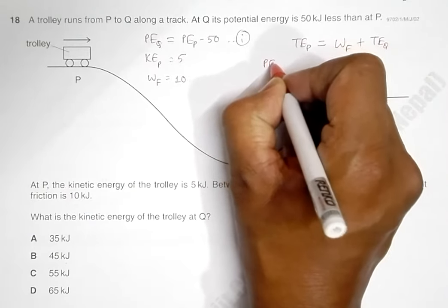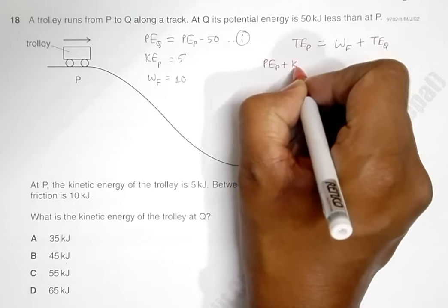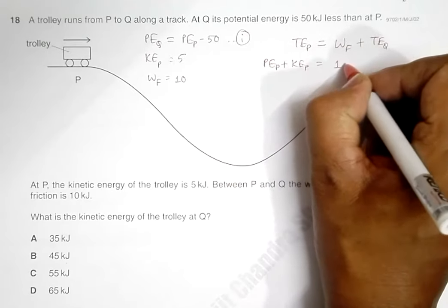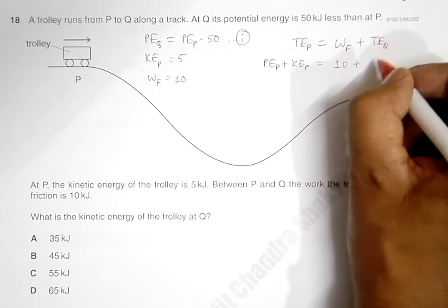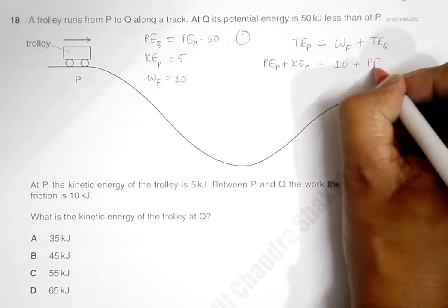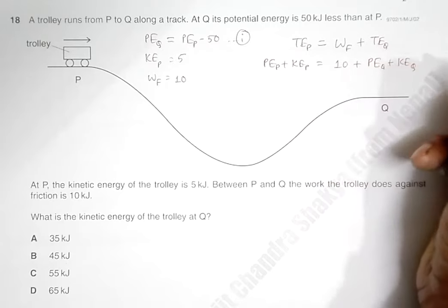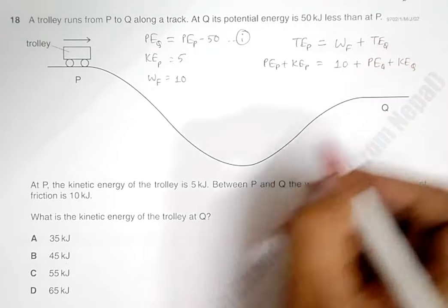So this is equal to potential energy at P plus kinetic energy at P, equal to work against friction plus total energy at Q, which is equal to potential energy at Q plus kinetic energy at Q.